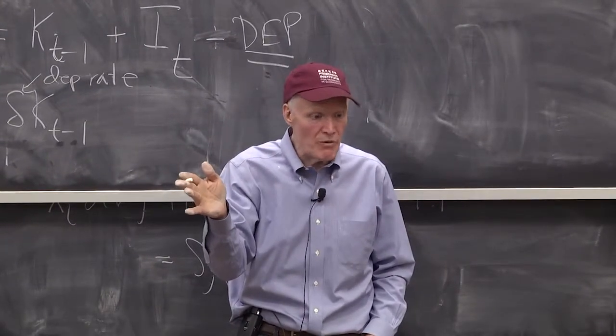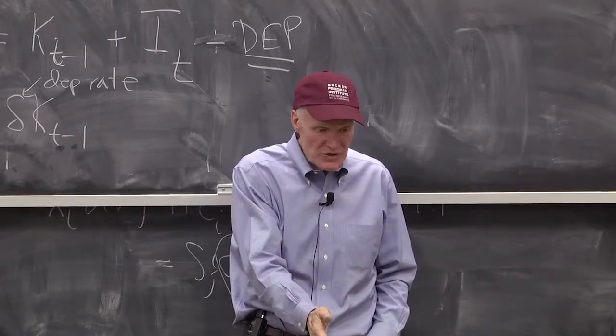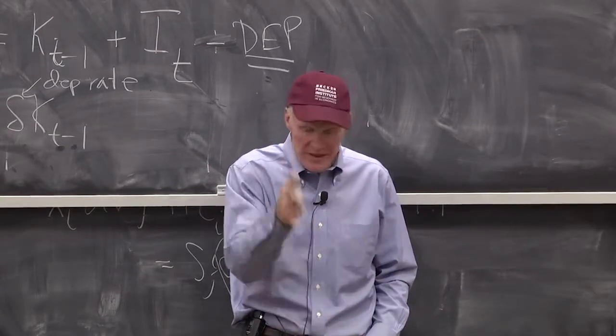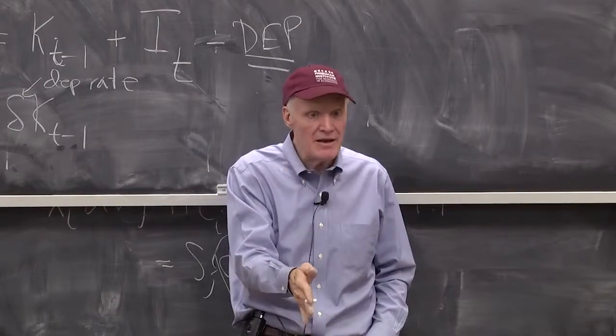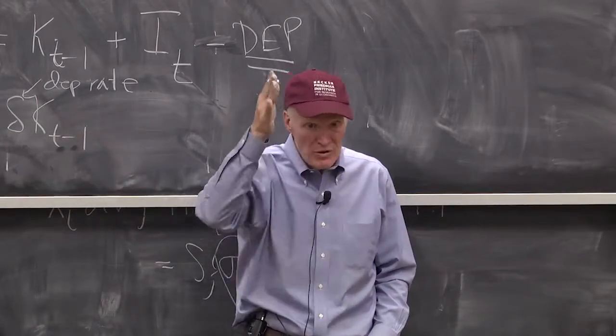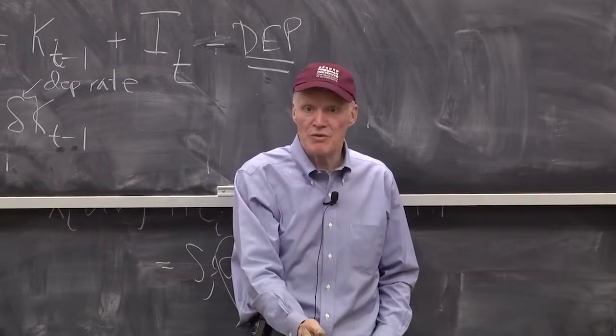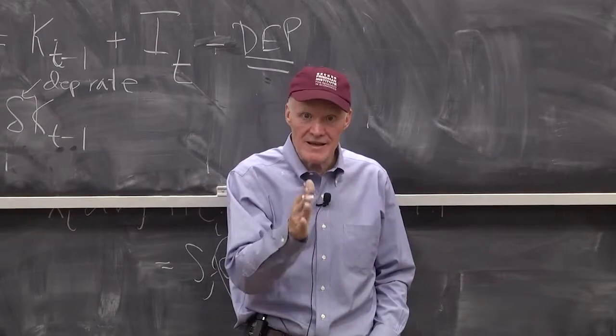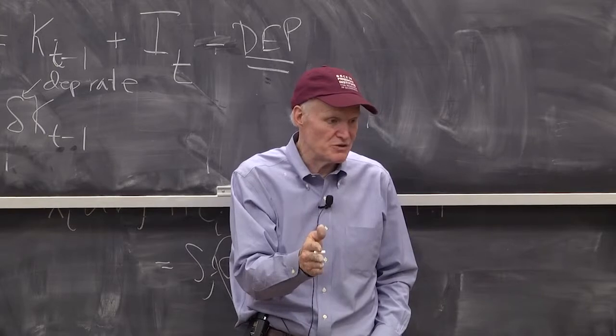If delta is 0.1, 10 units built yesterday will be the exact equivalent - not just today, but from today to the end of time - to 9 units built today. That's the key thing about exponential depreciation.